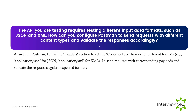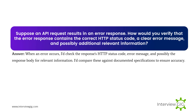The API you are testing requires testing different input data formats such as JSON and XML. How can you configure Postman to send requests with different content types and validate responses accordingly? In Postman, I'd use the headers section to set the Content-Type header for different formats — for example, application/json for JSON or application/xml for XML — then send requests with corresponding payloads and validate the responses against expected formats.